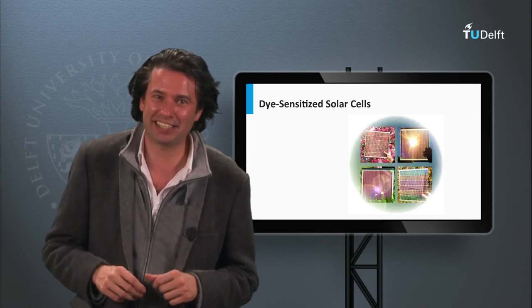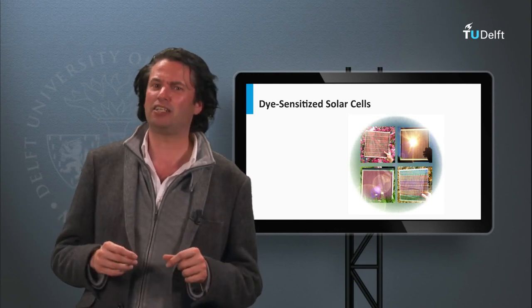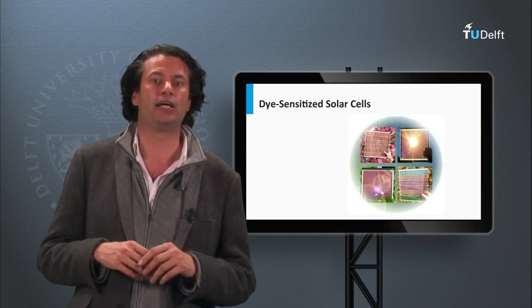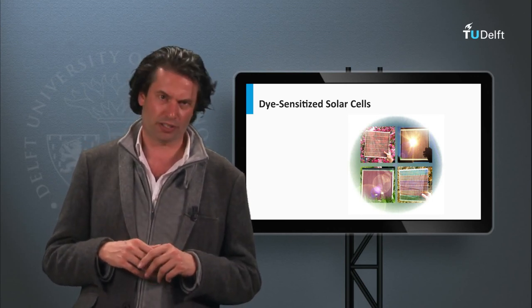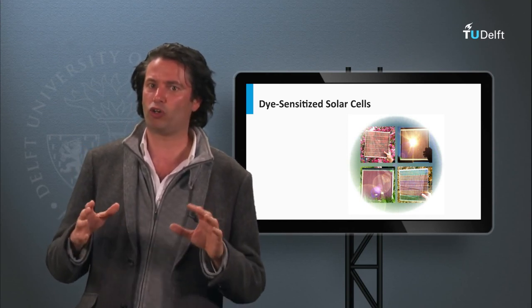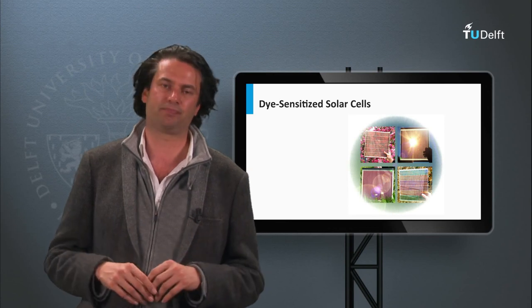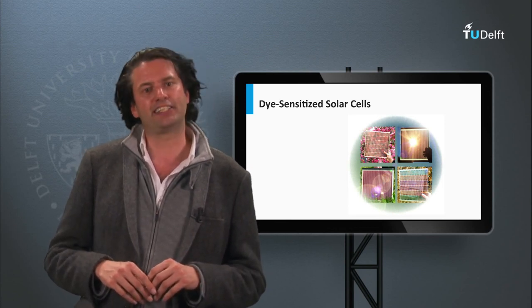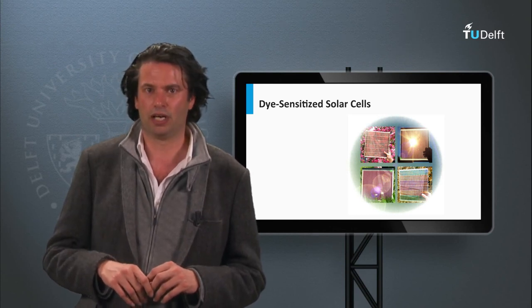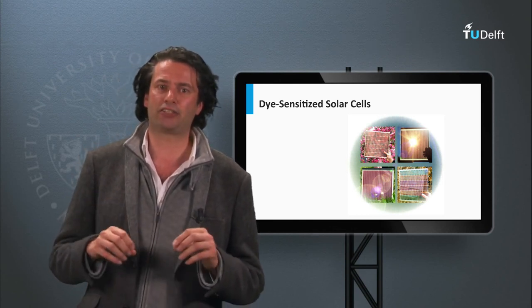The record efficiency of dye-sensitized PV device lab scale is currently 14.1 percent as achieved by EPFL in Switzerland. The advantage of dye-sensitized PV devices is the low cost price of producing the device. A disadvantage is the stability of the electrolyte under various weather conditions. At lower temperature the electrolyte can freeze.